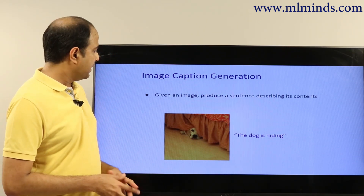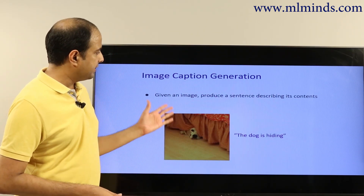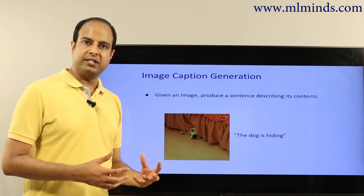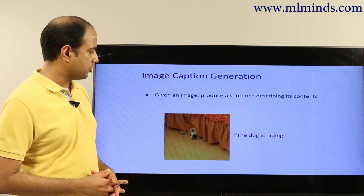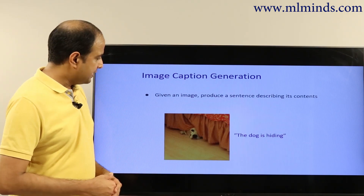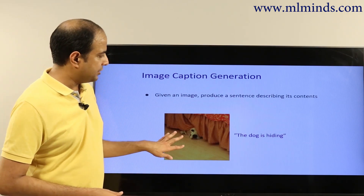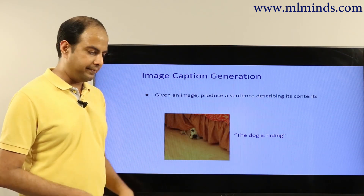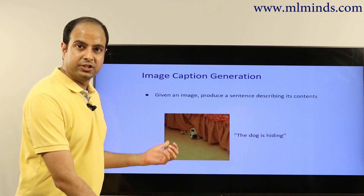Recently, people have started using machine learning in novel ways. For example, given an image, producing a sentence to describe its contents — also called image captioning. For instance, you want the model to be able to say 'the dog is hiding.' People have been using machine learning to do tasks of that kind as well.